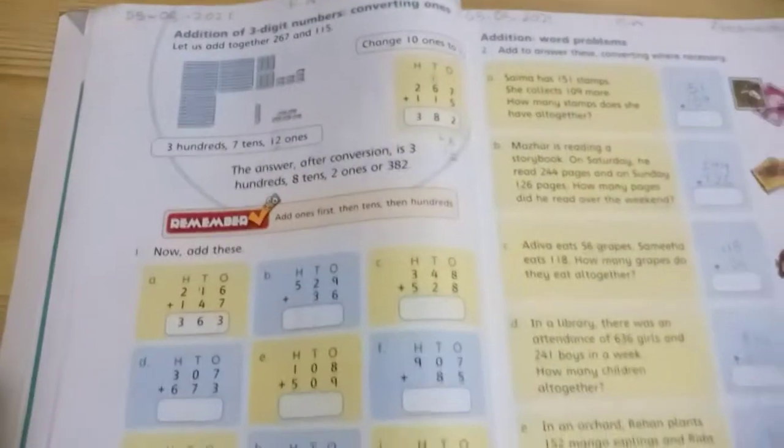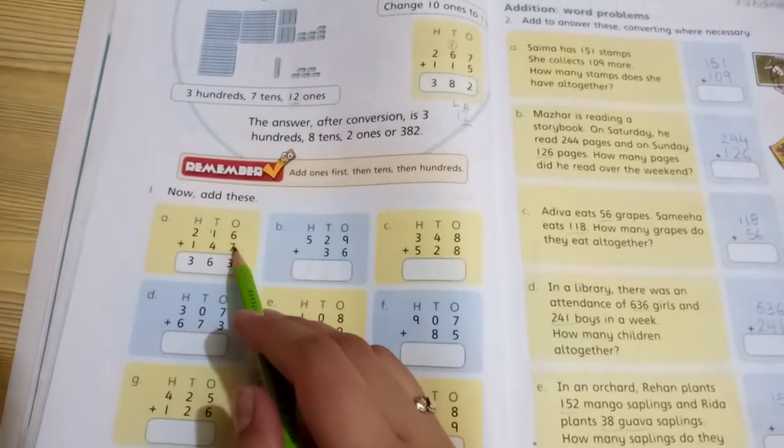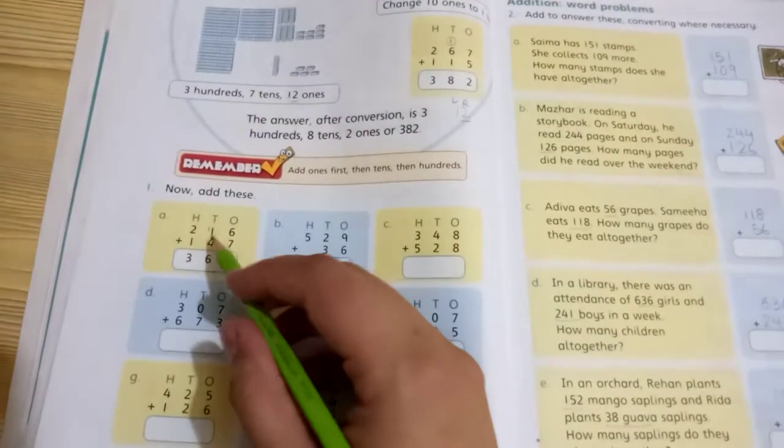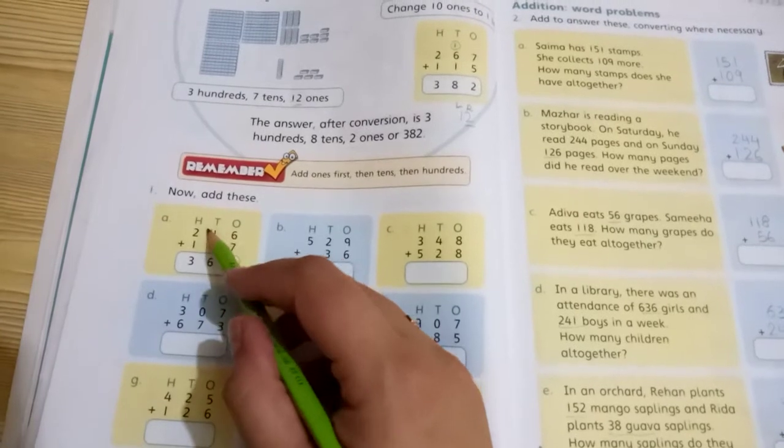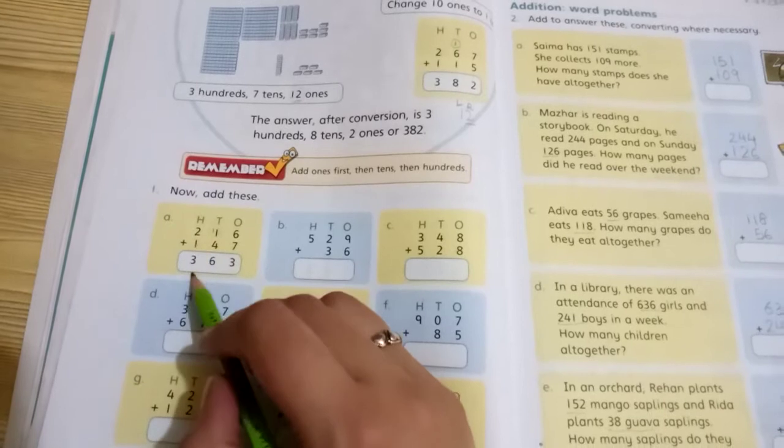Now I have done one addition sum for you, the rest you will do yourself. 6 plus 7 equals 13. Add 7 to 6, that's 13. Write 3, carry 1. In the tens place, add these numbers plus the carry: 4 plus 1 equals 5, plus the carry equals 6. So 6. 2 plus 1 equals 3.